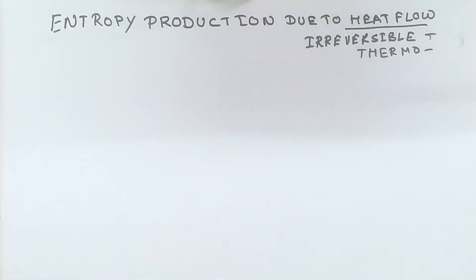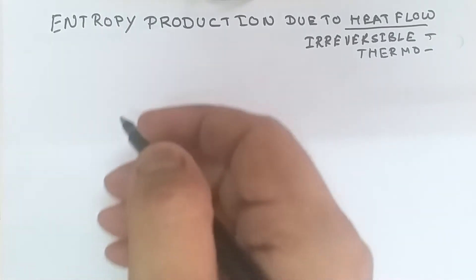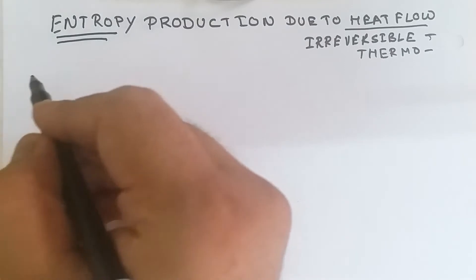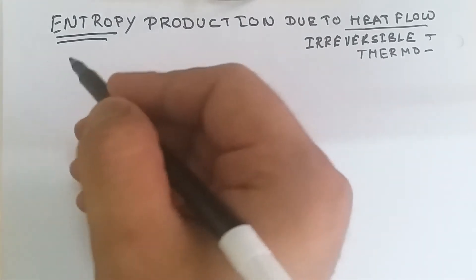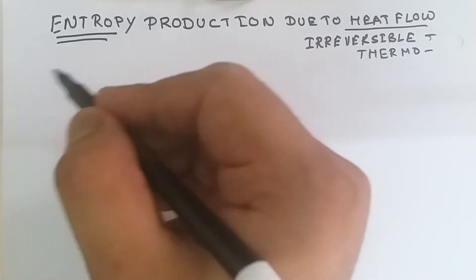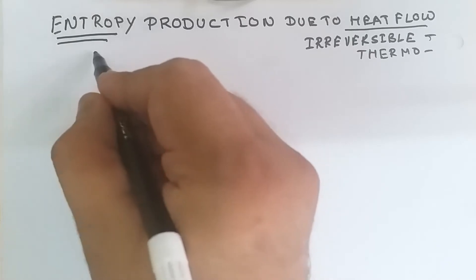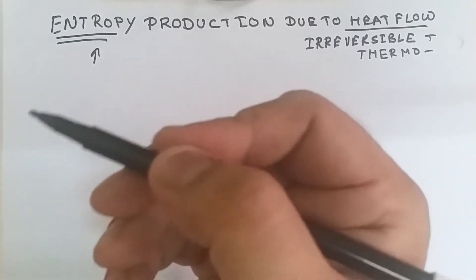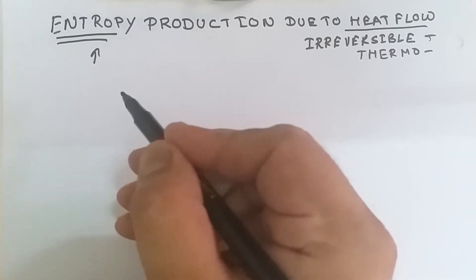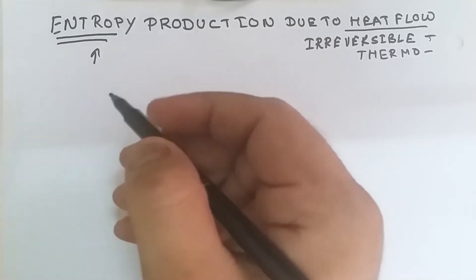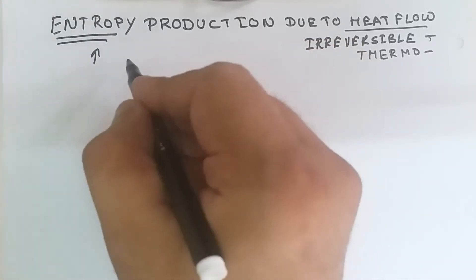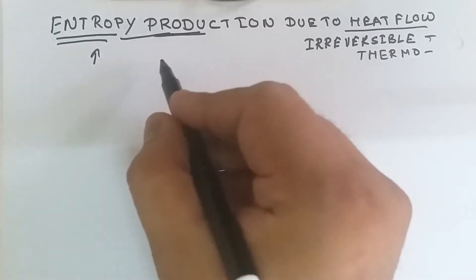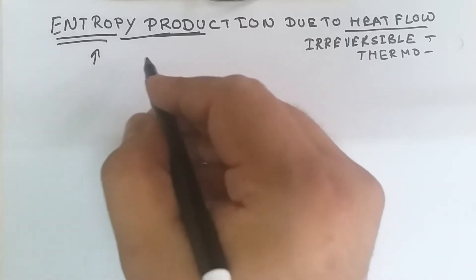We have already studied the first law of thermodynamics, which is the law of conservation of energy — energy can neither be produced nor destroyed. But entropy is a property which is not a conserved quantity. For any natural or spontaneous process, there is always an increase in entropy, meaning entropy is produced in such a process.